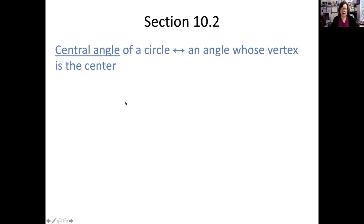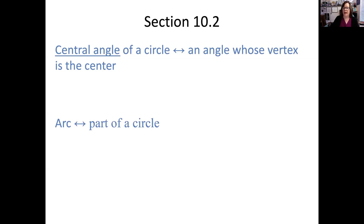The first thing we will do is define a certain kind of angle so that we can define arcs. A central angle of a circle is an angle whose vertex is at the center — it's a very intuitive name. An arc is part of a circle, and an angle cuts the circle into pieces. Those pieces we call arcs, and depending upon how big they are, we have different names for them.